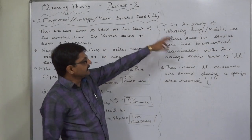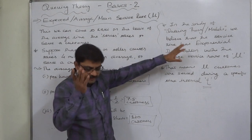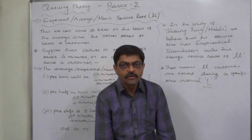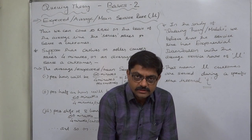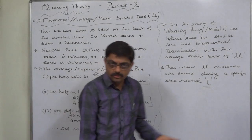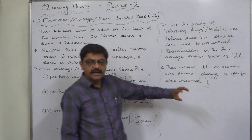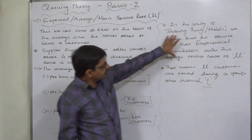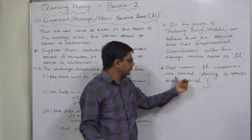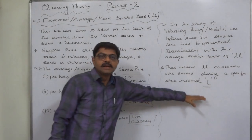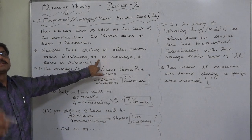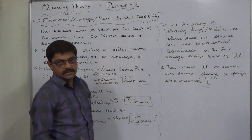The important thing in the study of queuing theory or queuing models is that we assume the service time has an exponential distribution with an average service rate of mu. In statistical methods, you must have studied exponential distribution. If not, just go through its basic concepts. The ultimate conclusion is that mu number of customers are served during the specific time interval T, provided we have knowledge about the average time a server takes to serve one customer.